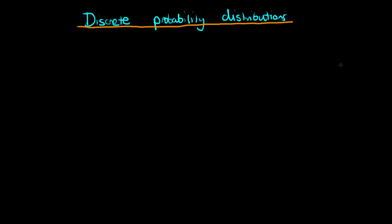In this video, I'm going to provide an introduction to discrete probability distributions. These are distributions which can be used to describe things which can only take on discrete values. For example, if you're modelling the count of some particular type of event, or let's say you're modelling one individual event in itself, such as the outcome of a horse race — in this case, you might be modelling just the success or failure of one particular event.